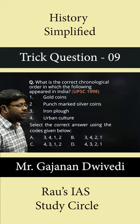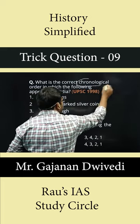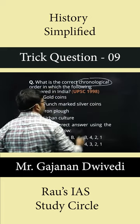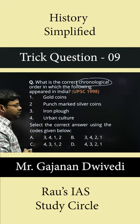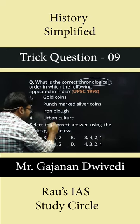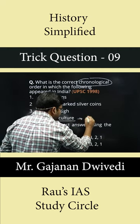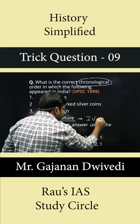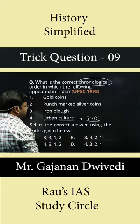In this question on your PC, we have to figure out the correct chronological sequence. The easiest information to figure out here is that the urban culture was there in the times of the Indus Valley Civilization.